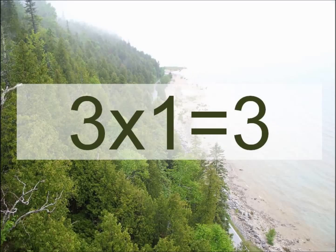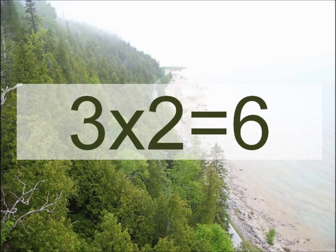Three times one equals? Three. Three times one equals? Three. Three times two equals? Six. Three times two equals? Six.